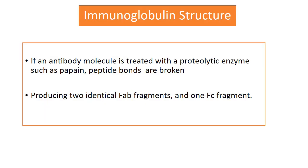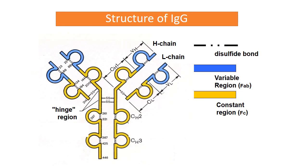If an antibody is treated with the proteolytic enzyme papain, peptide bonds are broken producing two identical Fab fragments and one Fc fragment. The Fab fragment corresponds to the variable region and is specific for the antigen. The Fc fragment corresponds to the constant region and carries out all the biological activities of the antibody.